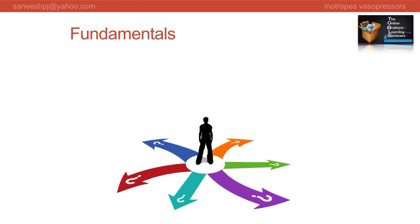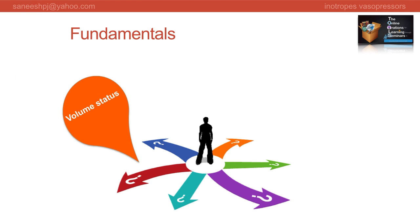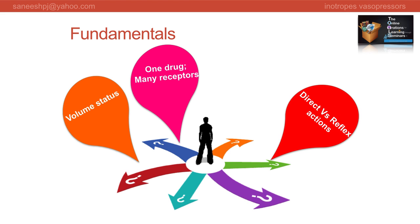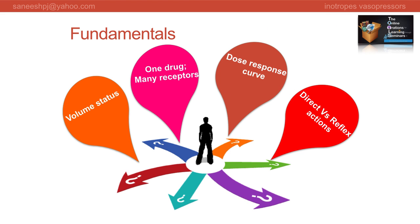A few fundamental concepts. Your patient's volume status should be optimized before instituting inotropes or vasopressors. Most drugs being considered here may act on many receptors - that is, one drug, many receptors. You should be able to recognize the effects of a drug as a direct or reflex action. For example, vasodilators and vasoconstrictors lack primary cardiac effects but indirect cardiac effects still occur due to sympathetic reflexes. Also, vasoactive drugs display a nonlinear dose response whereby the incremental clinical response achieved with dose titration declines at higher doses.